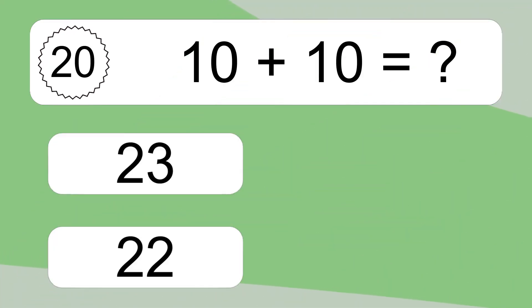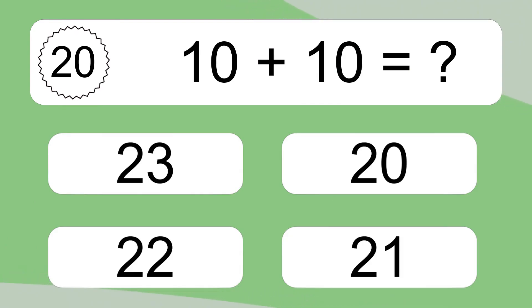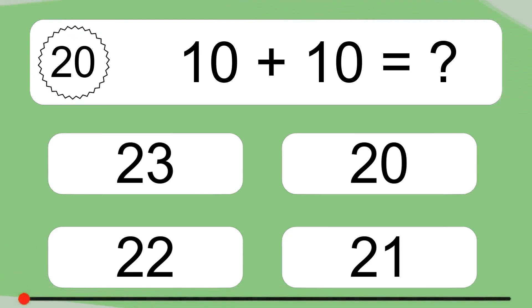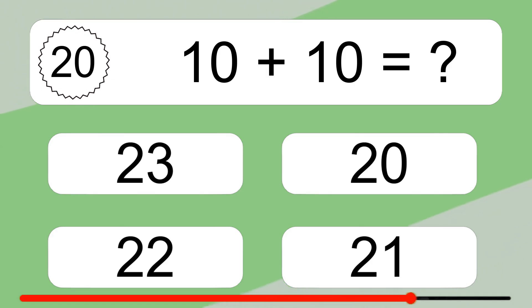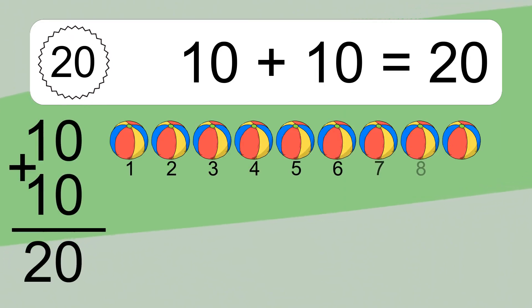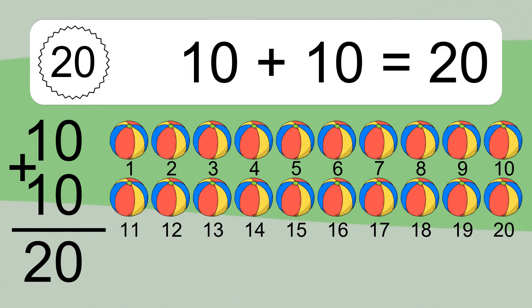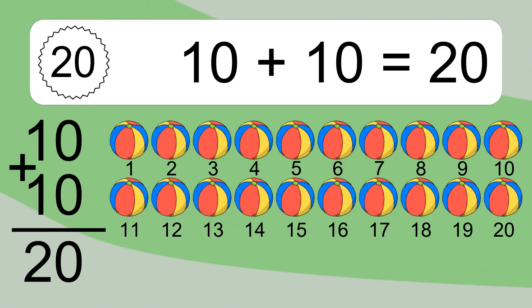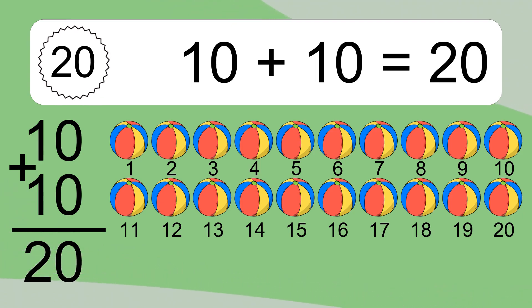10 plus 10 equals what? 10 plus 10 equals 20. Let's count it: 1, 2, 3, 4, 5, 6, 7, 8, 9, 10, 11, 12, 13, 14, 15, 16, 17, 18, 19, 20.